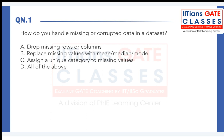The first question says: how would you handle missing or corrupted data in a dataset? There are a few options: you would drop the missing rows or columns, you would replace the missing values with the mean, median, or mode, you will assign a unique category to the missing values, or you will do all of the above.